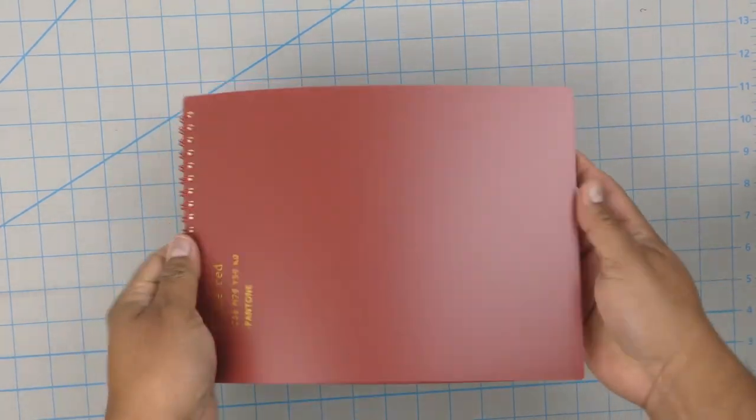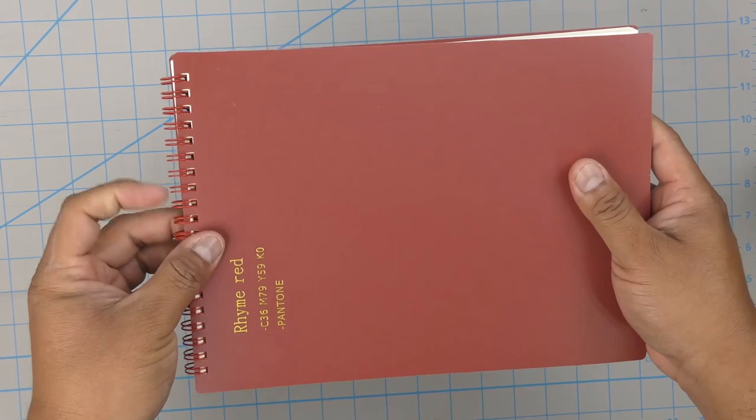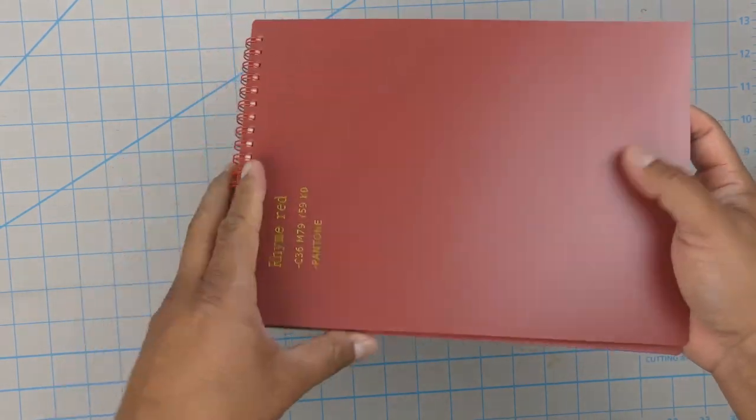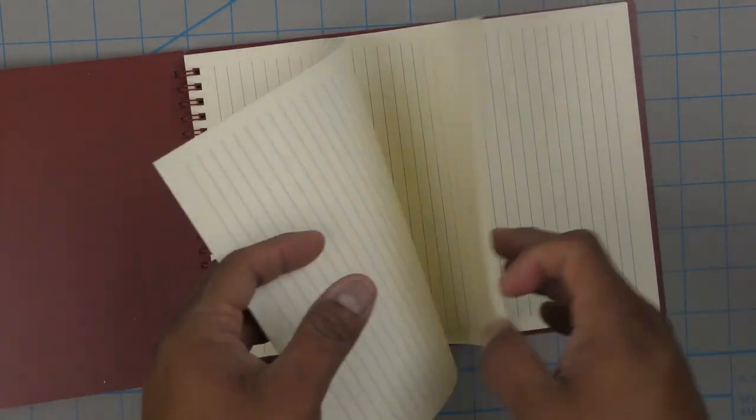This is sturdy plastic. The wire seems to be on the thin side, but let's see. The page layout is lined, which I don't like. I'd rather have dot or square, but it's what they have for me, so it's what I have for you.